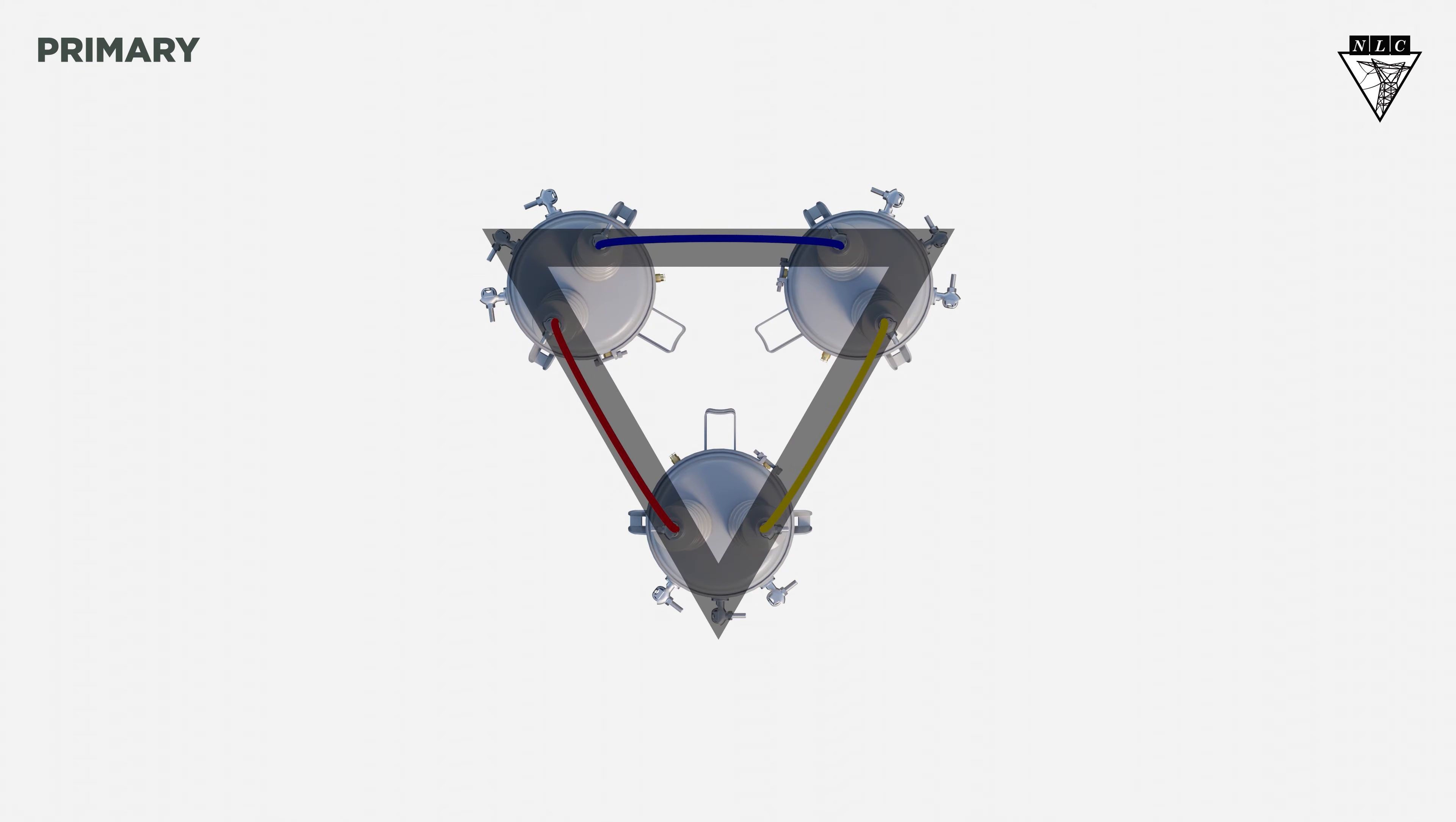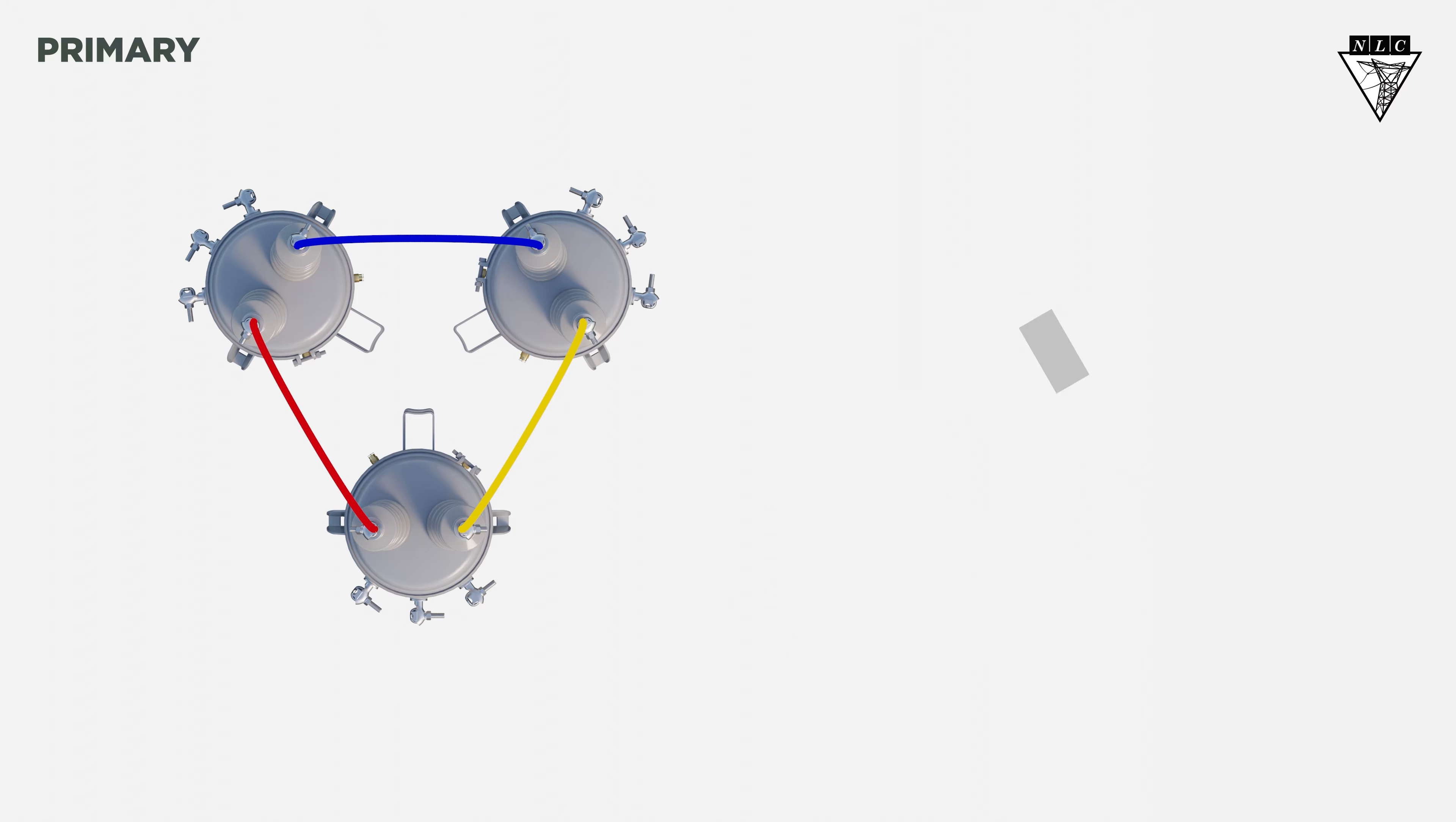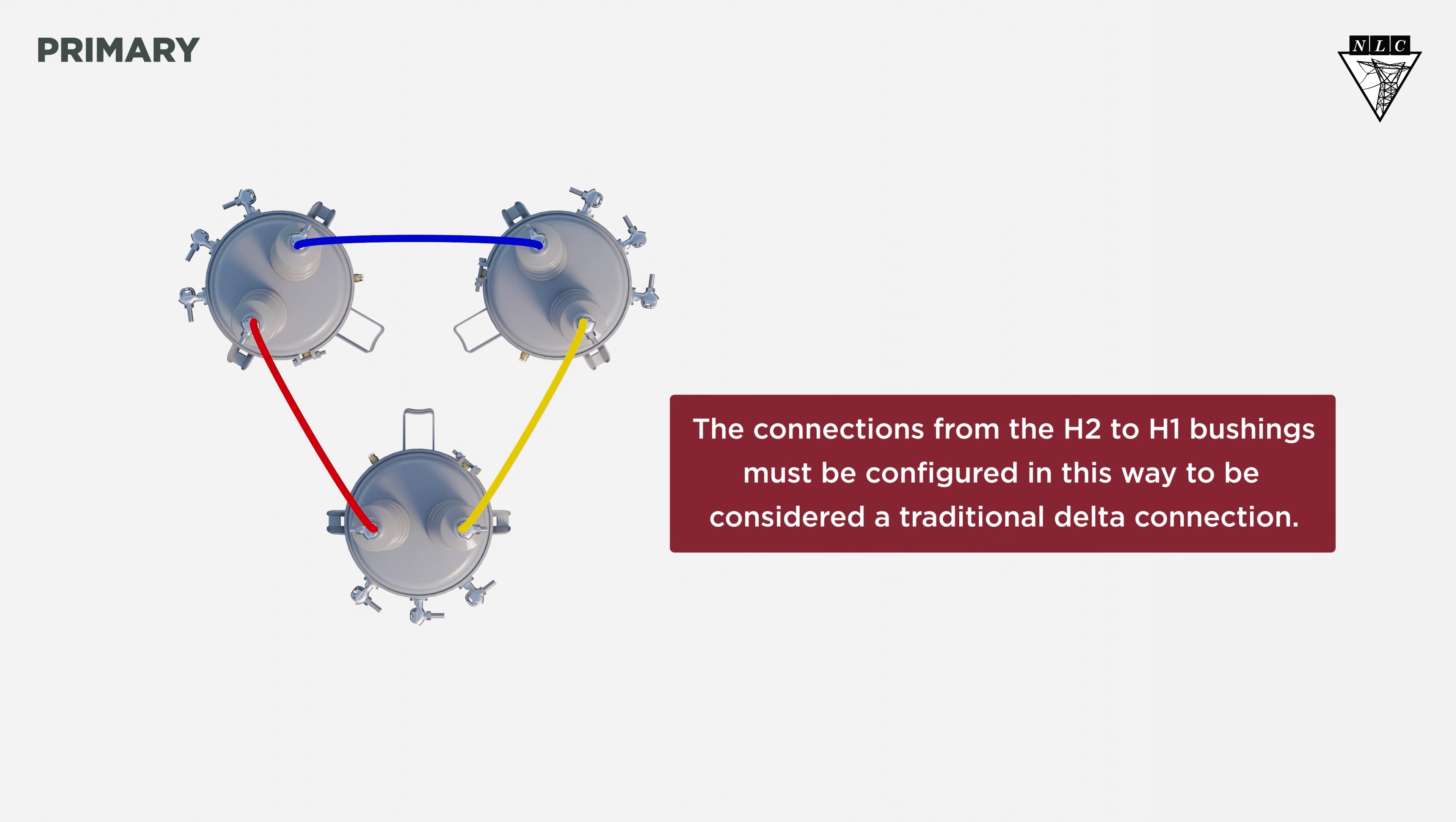This forms a closed triangular loop on the primary side, resembling the Greek letter delta. The connections from the H2 to H1 bushings must be configured in this way to be considered a traditional delta connection.